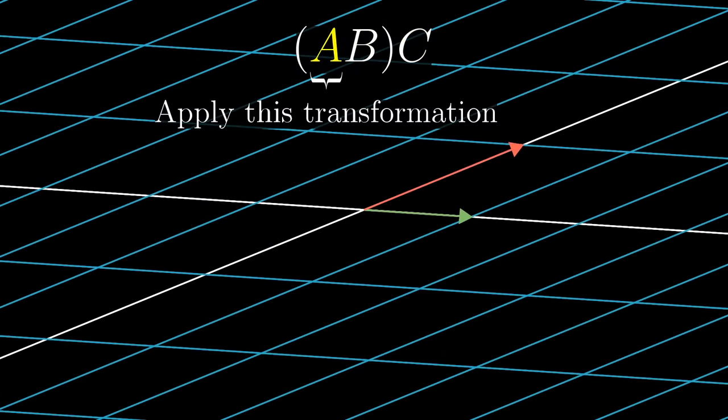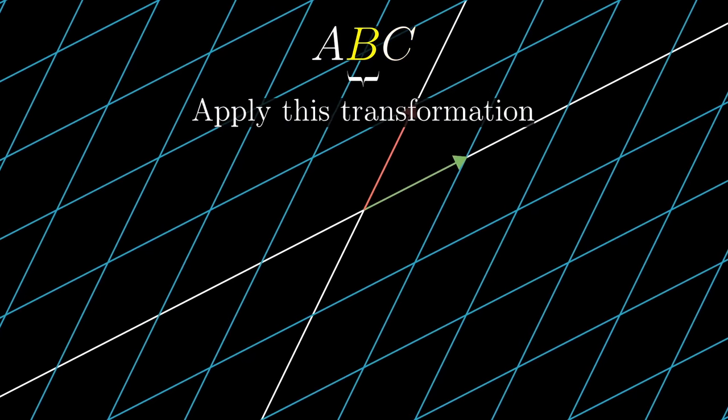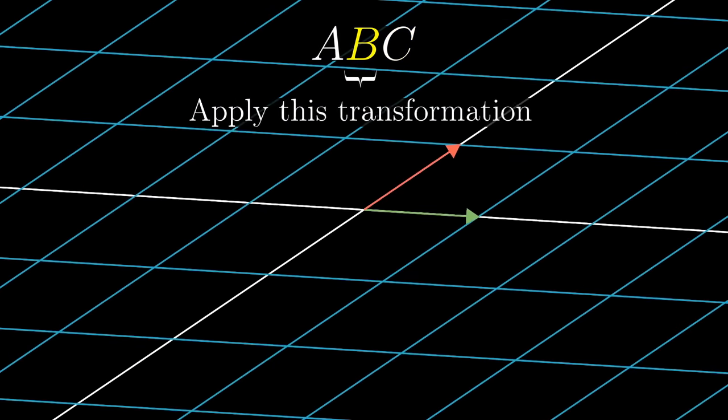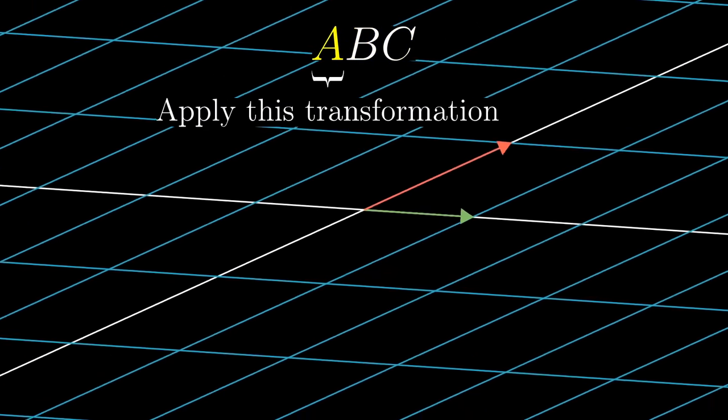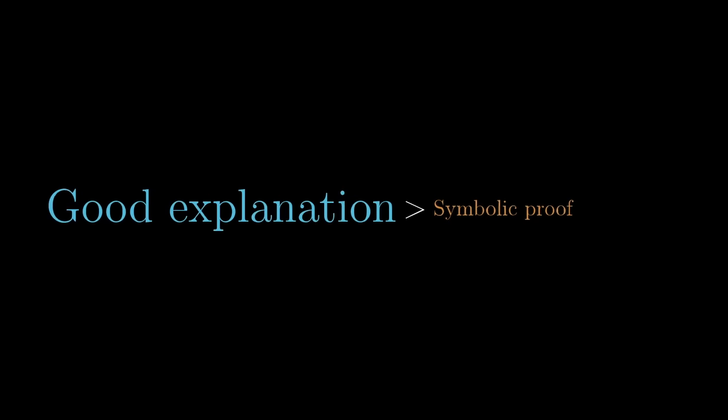I mean, there's nothing to prove. You're just applying the same three things, one after the other, all in the same order. This might feel like cheating, but it's not. This is an honest-to-goodness proof that matrix multiplication is associative. And even better than that, it's a good explanation for why that property should be true.